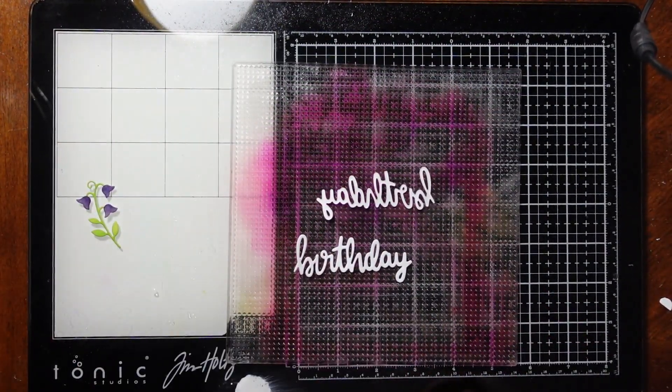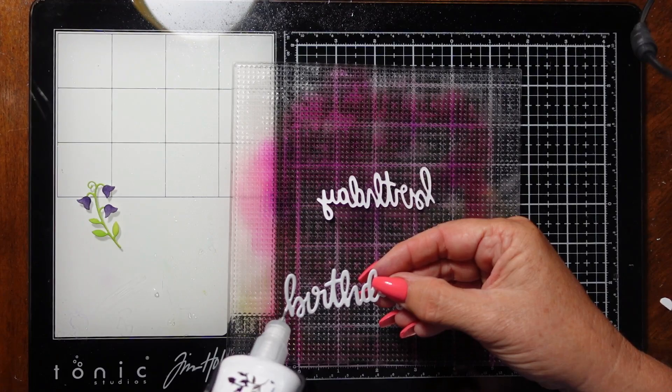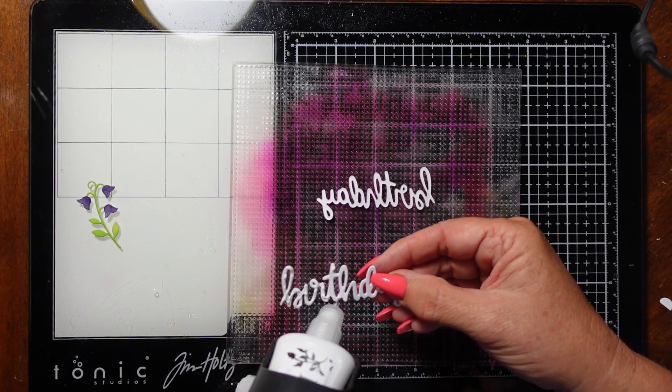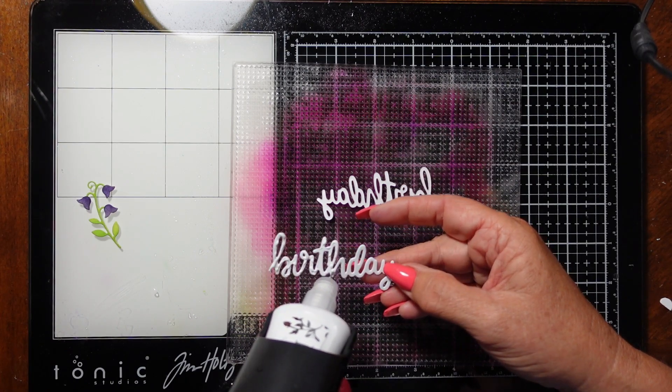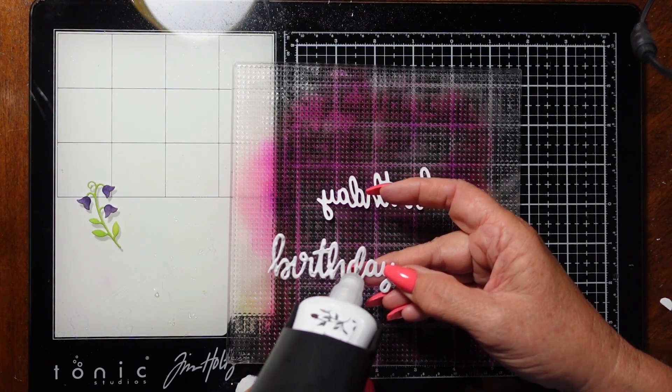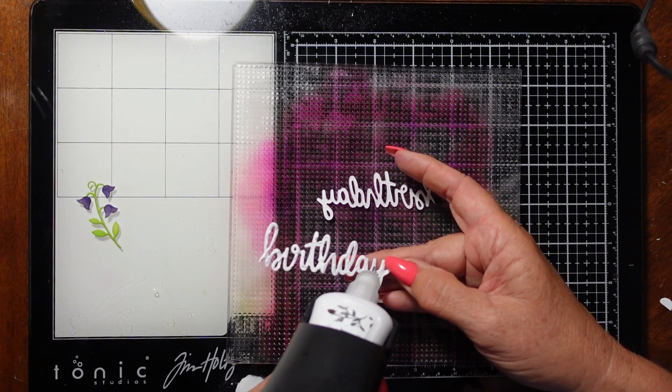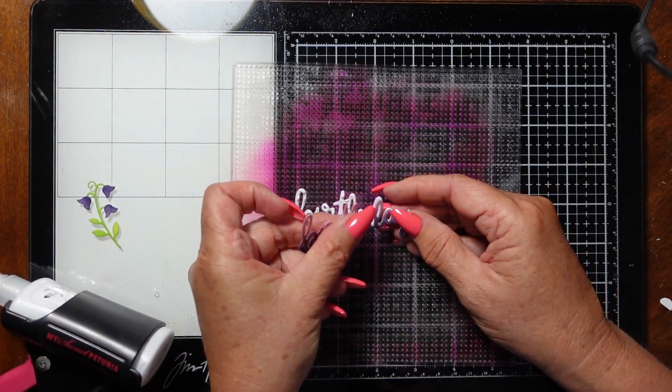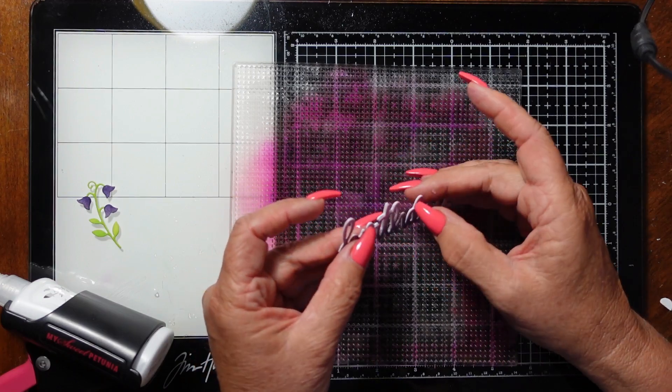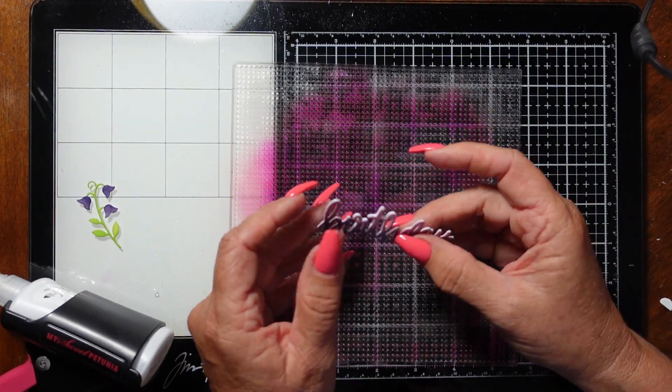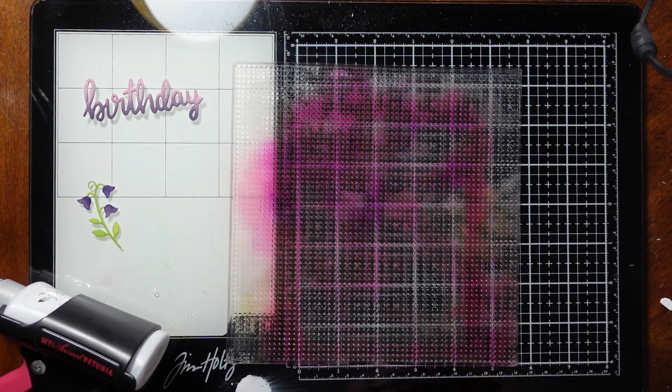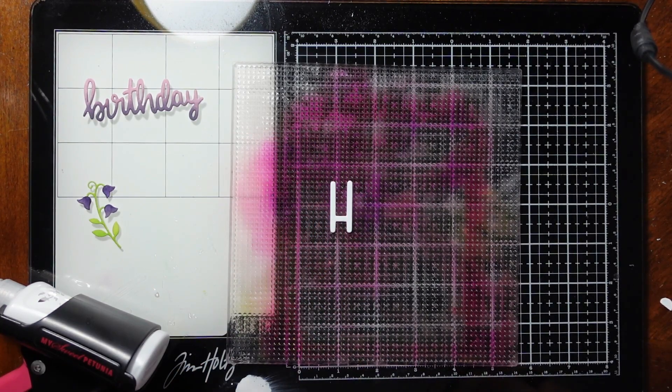I've added the additional two die cuts together, and we're going to stack our ink-blended die cut to the top of this. This is three layers deep. I'm going to do the same thing with the word Happy. I really love my sentiments to have a little bit of bulk to them, and this is one way you can do that to make the sentiment stand out.